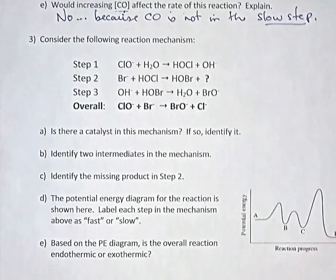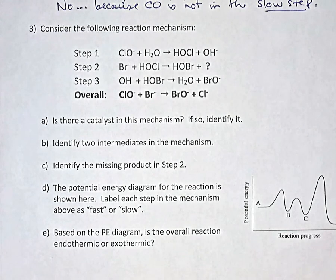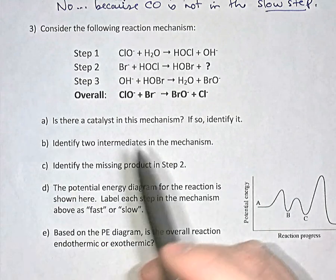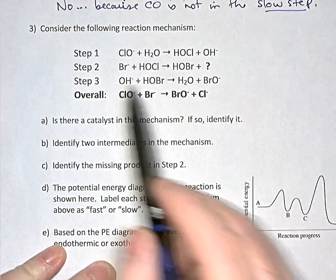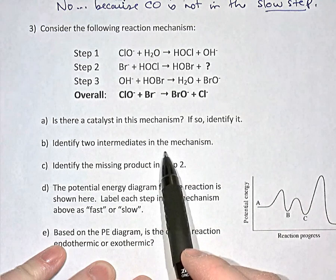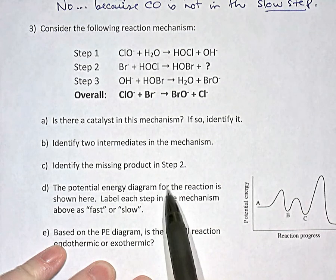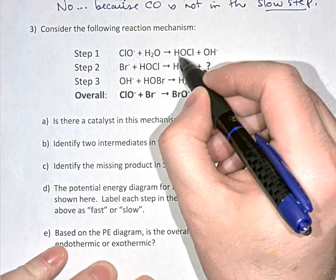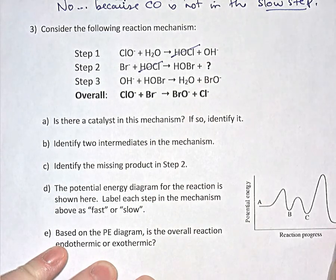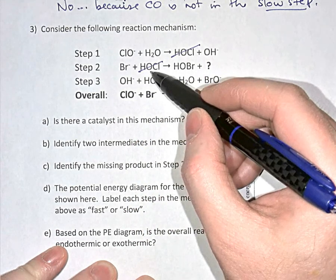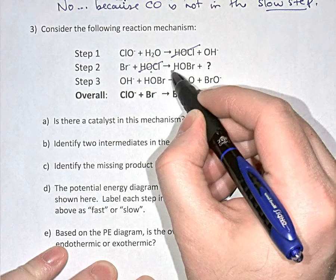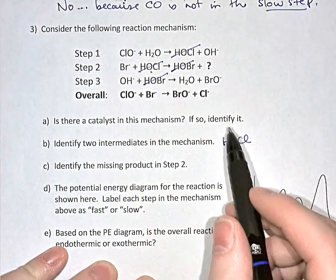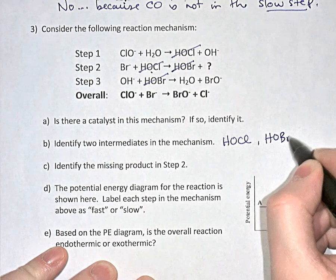Question number three: pause the video and see if you can answer those questions about the three-step reaction mechanism. Catalysts are substances that appear as a reactant first and then later as a product. HOCl is produced in step one and used up in step two — product then reactant — so HOCl is an intermediate. The HOBr is produced in step two and used up in step three, so HOBr is also an intermediate.